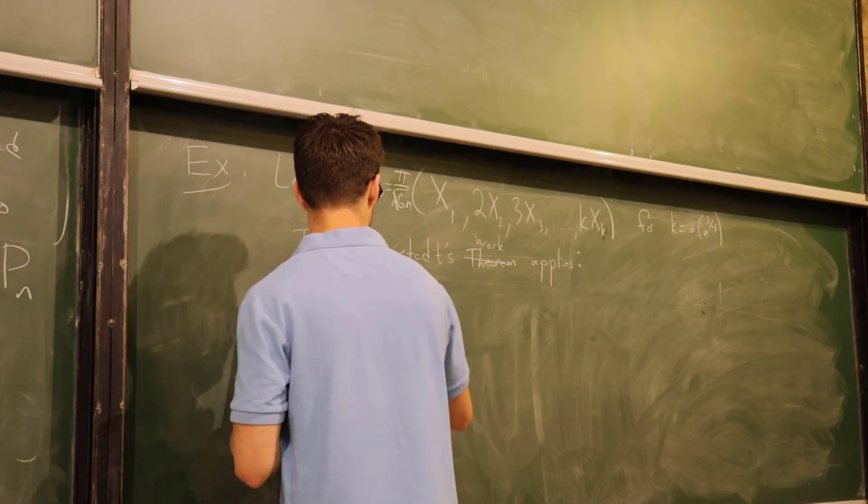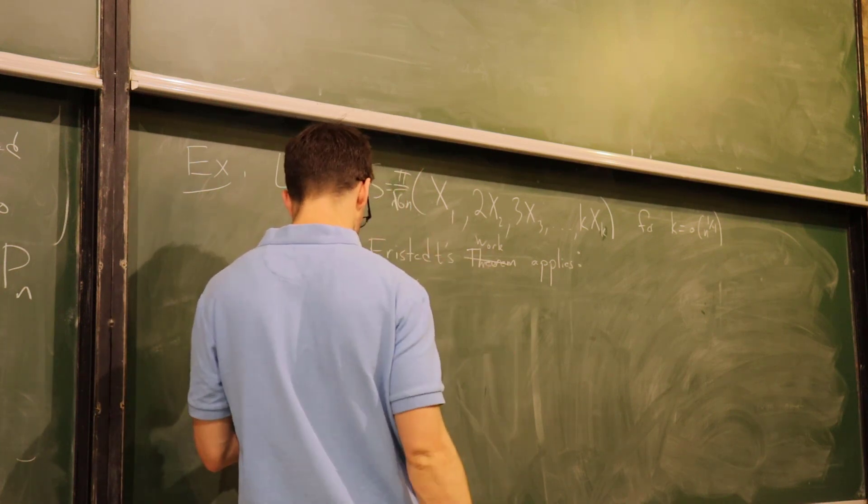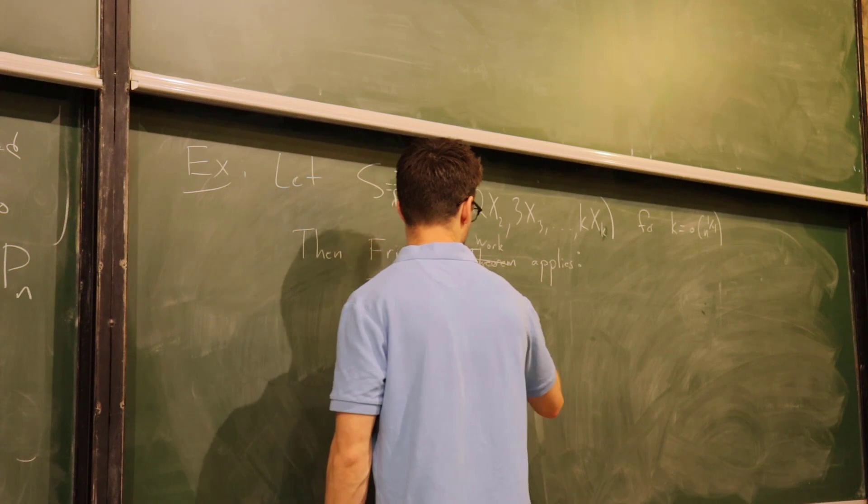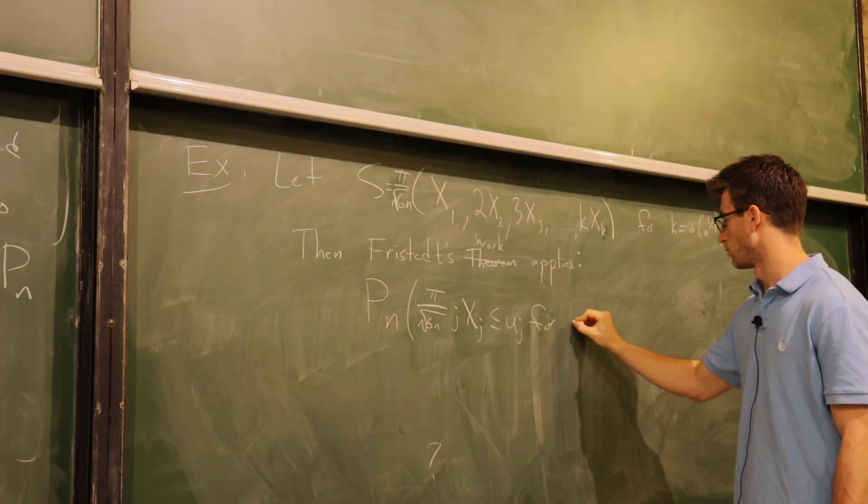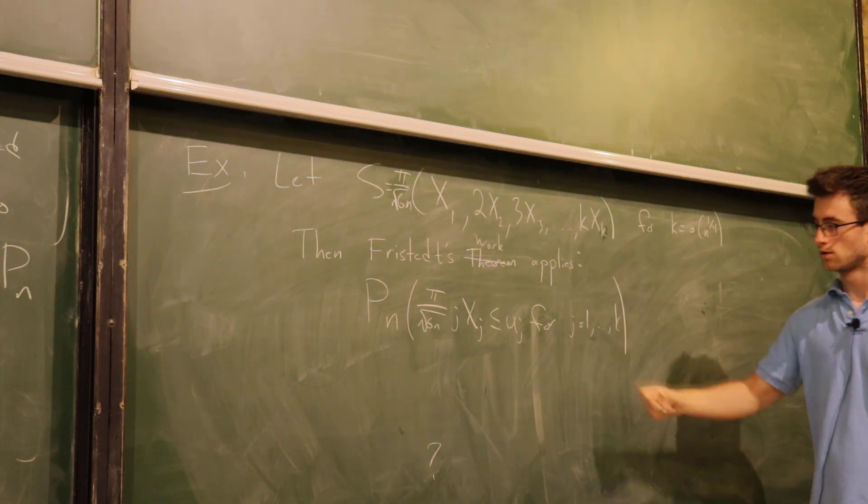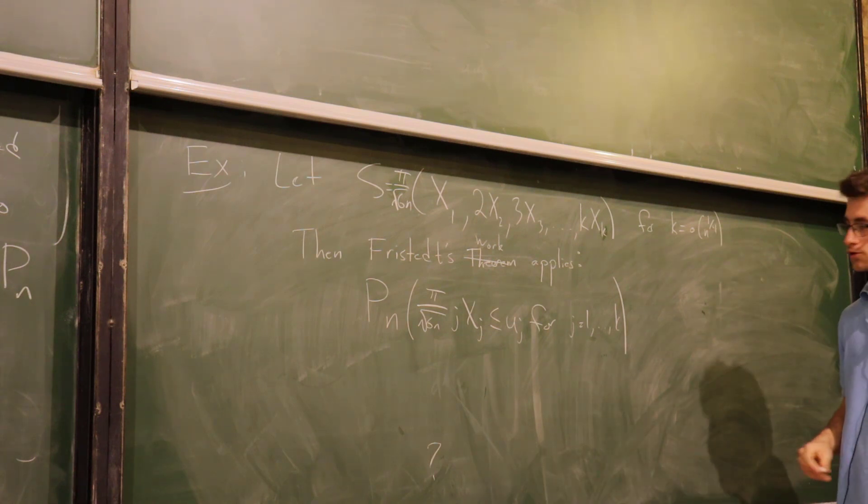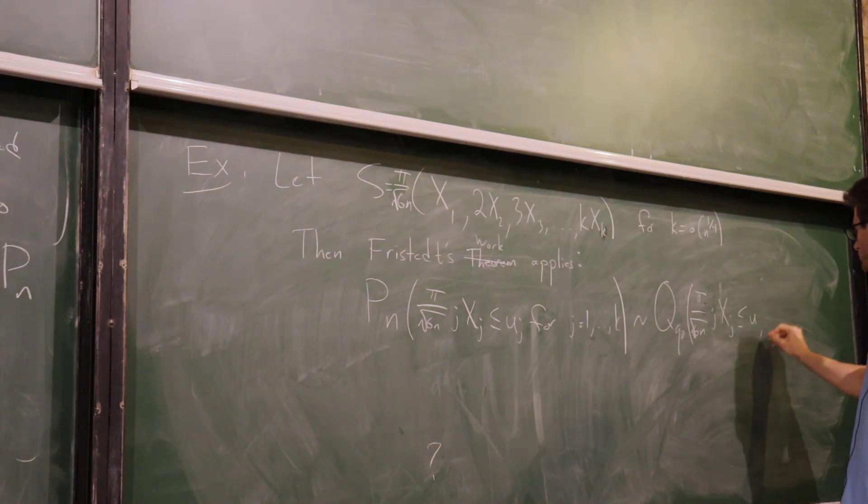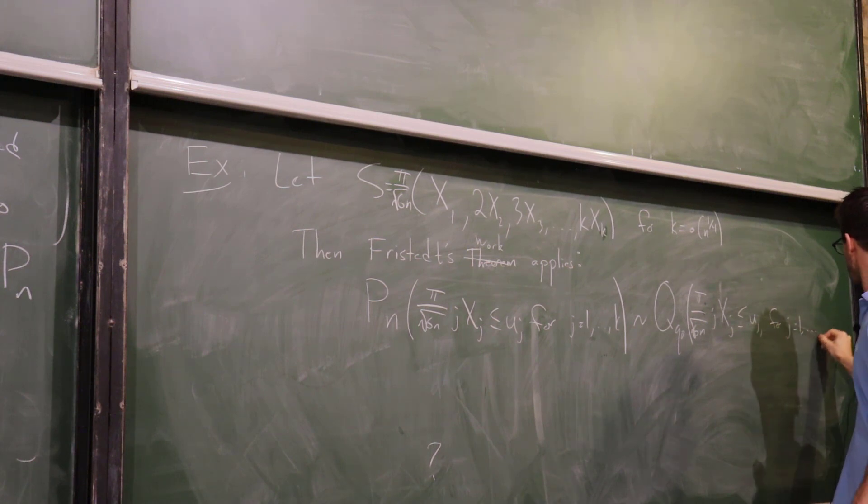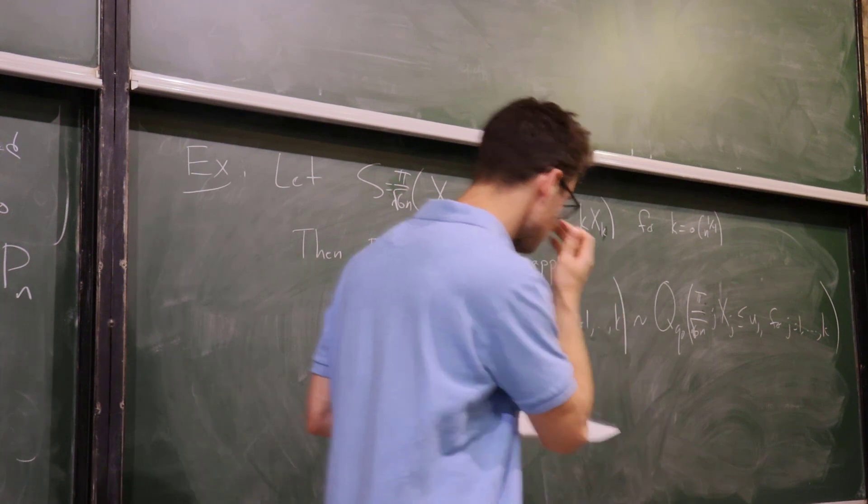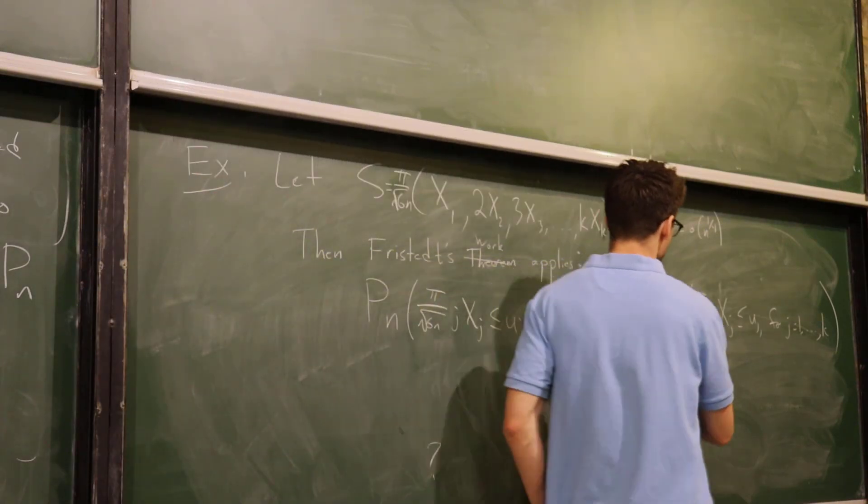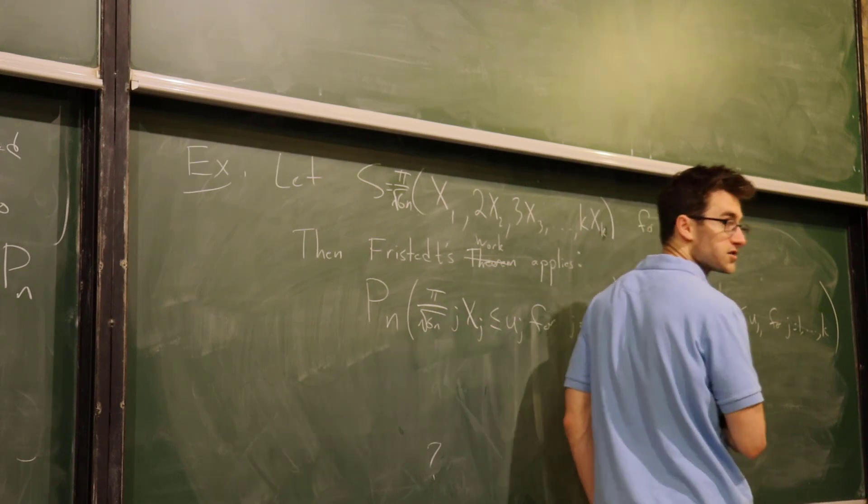We saw this example yesterday, but I'll remind you. We could take s as the sequence x1, and then we have to rescale, pi over root 6 n: x1, 2 x2, 3 x3, up to some k xk. In fact, k can depend on n. So k can be anything up to the fourth root of n. Then Fristedt's theorem applies in this case. The probability that this sequence is less than something, so pi root 6 n j xj less than u j for j from 1 to k, this distribution coincides with that of the Boltzmann model, asymptotic to q q naught of the same thing.